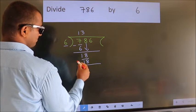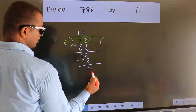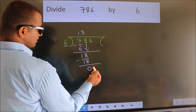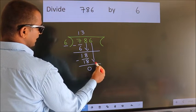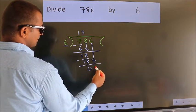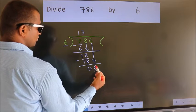Now we subtract. We get 0. After this, bring down the beside number. So 6 down. So 6.